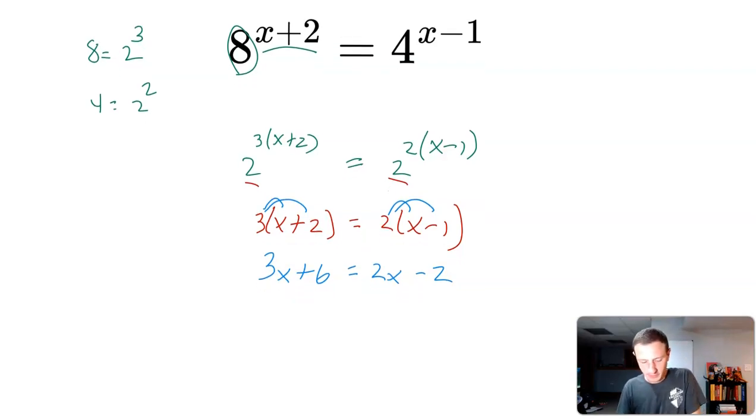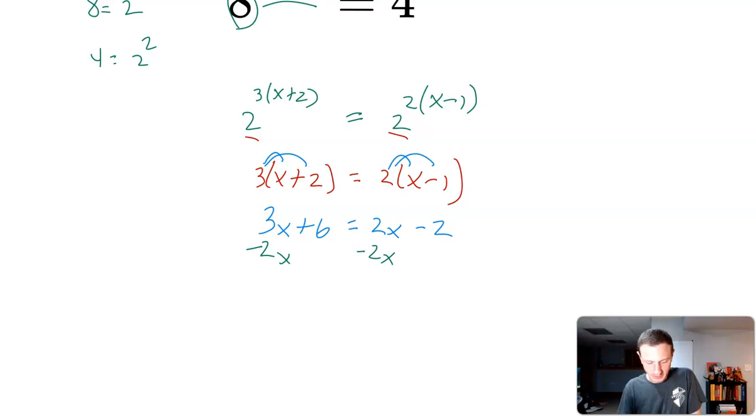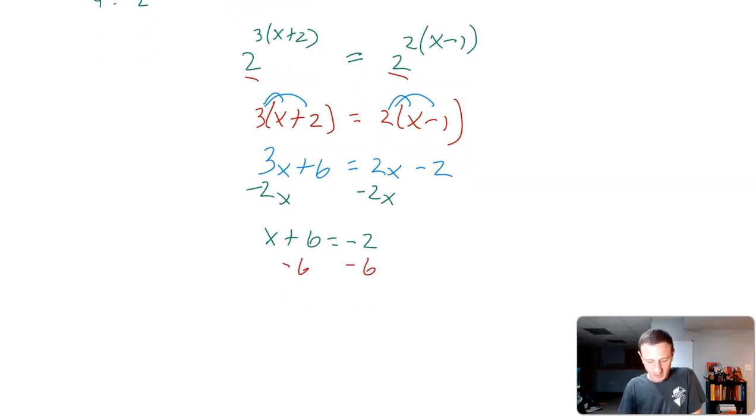Keep solving for x. Nothing too fancy here. I'm going to subtract 2x from both sides. So I get 3x minus 2x is 1x plus 6 equals negative 2. I'm going to subtract 6 from both sides, giving me x equal to negative 8.